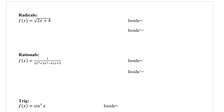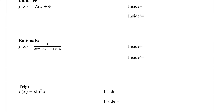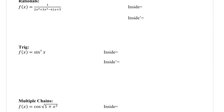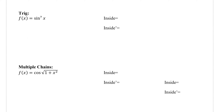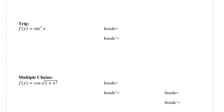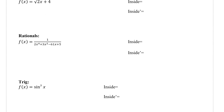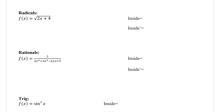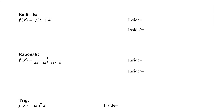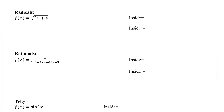These are more examples of chain rule. We're going to cover what to do with radicals, rationals, trig, and multiple chains. We already did one with a binomial expansion, a polynomial.